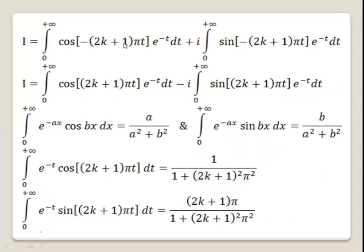We know that cosine of minus alpha equals cosine alpha, and sine of minus alpha equals minus sine alpha. So I becomes the integral from 0 to plus infinity of cosine((2k+1) pi t) e to the minus t dt, minus i times the integral from 0 to plus infinity of sine((2k+1) pi t) e to the minus t dt.